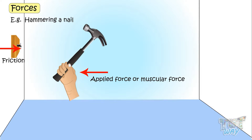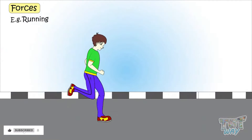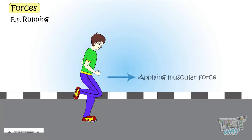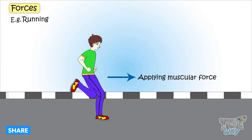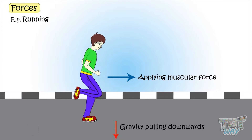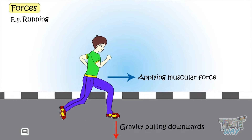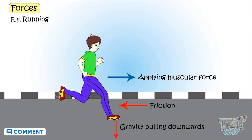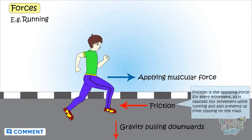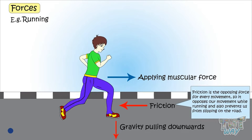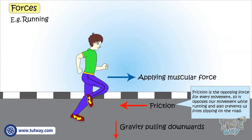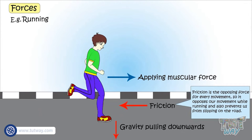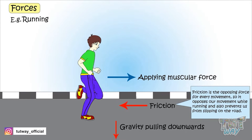Now let's see forces acting while we are running. We are applying muscular force to move forward. Gravity is pulling us downwards. Friction, as we know, is the opposing force for any movement, so it opposes our movement and also prevents us from slipping on the road.